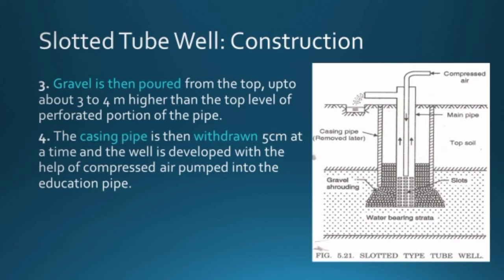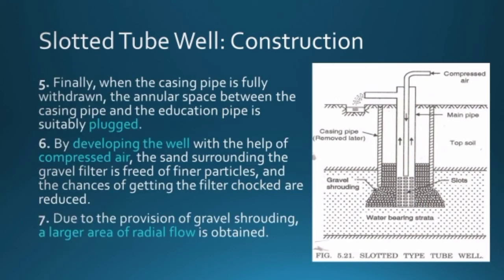The well is developed by pumping compressed air through the main pipe, flushing finer particles out of the shrouded area so no finer soil enters the pumped water. After the casing pipe is fully withdrawn, the annular space between the casing pipe and the main pipe is suitably plugged to prevent impurities from entering. Developing with compressed air frees the sand surrounding the gravel filter of fine particles, reducing chances of filter clogging and muddy water. The purpose of gravel shrouding is to achieve a larger area of radial flow for greater yield.